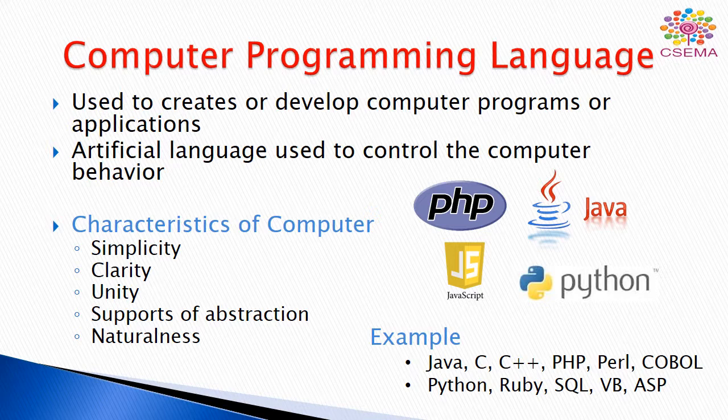Naturalness means that the written computer codes must be natural so that users can understand them easily. Examples of programming languages include Java, C, C++, PHP (which stands for Hypertext Preprocessor), Perl, COBOL, Python, Ruby, and Erlang. There are many languages used to communicate with computer systems and handle all operations with computers.